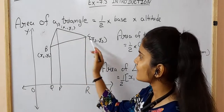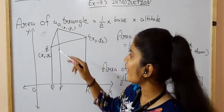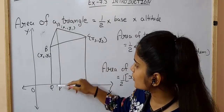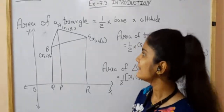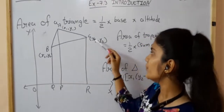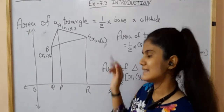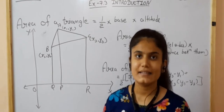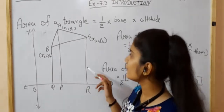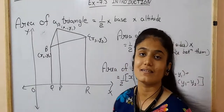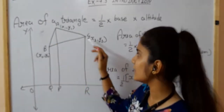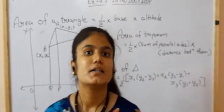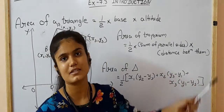To find this area, we first find the area of trapezium ABQP, then trapezium APRC, and subtract from trapezium BQRC to get the area of triangle ABC. To find the area of a trapezium, the formula is: 1/2 into sum of its parallel sides into the distance between them.